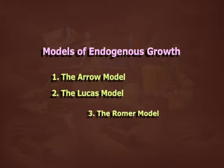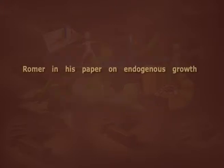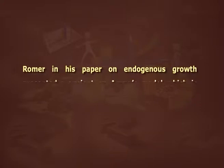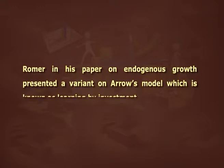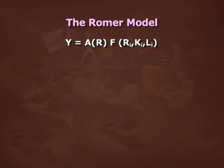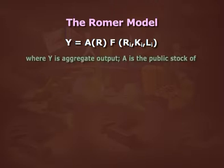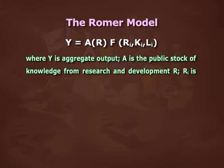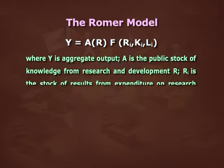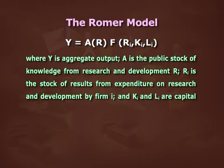Romer, in his paper on endogenous growth, presented a variant on Arrow's model known as learning by investment. He assumes creation of knowledge as a side product of investment and takes knowledge as an input in the production function, presented as y = A(R) · f(ri, ki, li), where y is aggregate output, A is the public stock of knowledge from research and development, ri is the stock of results from expenditure on research and development by firm i, and ki and li are capital stock and labor stock of firm i respectively.